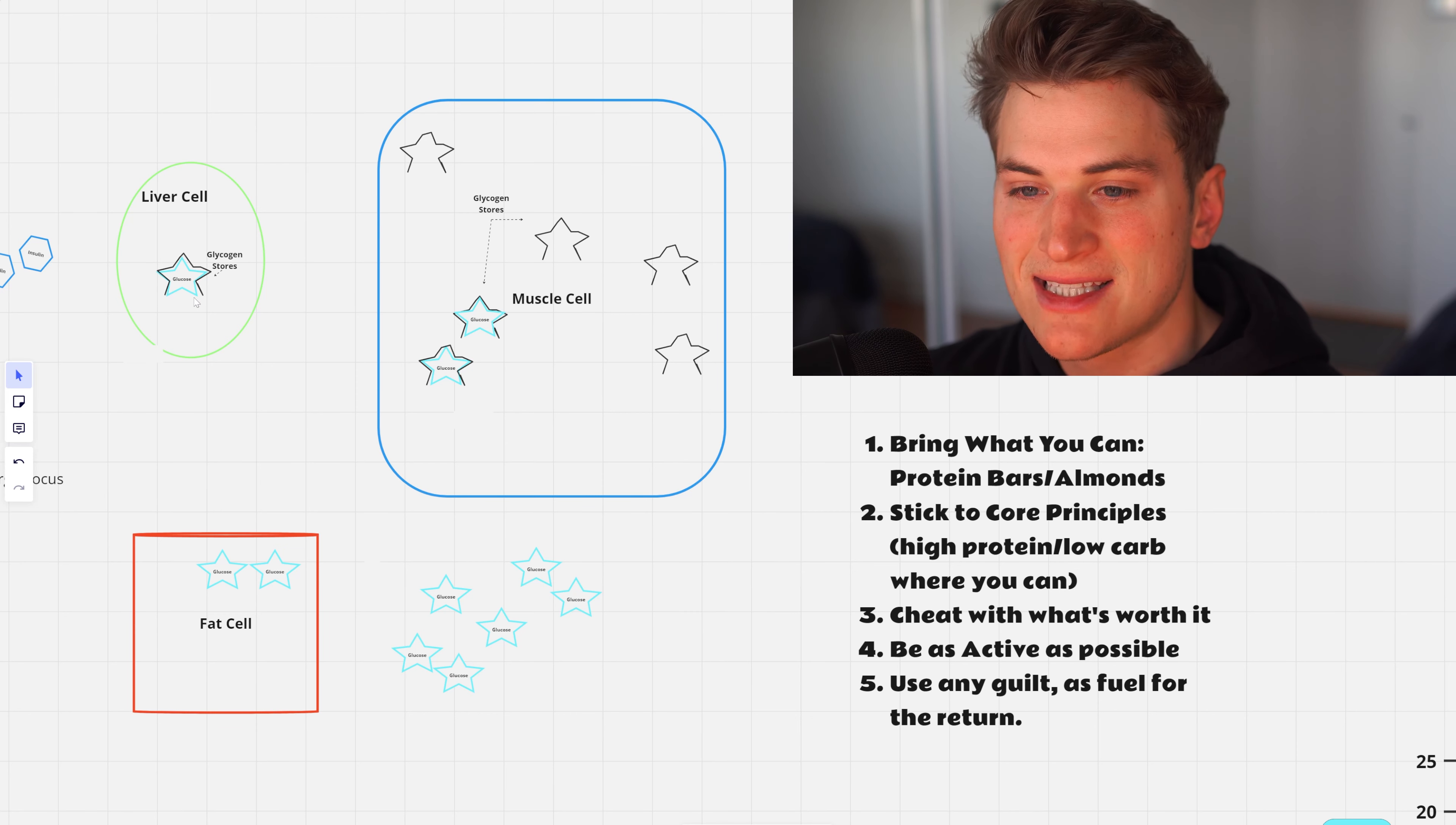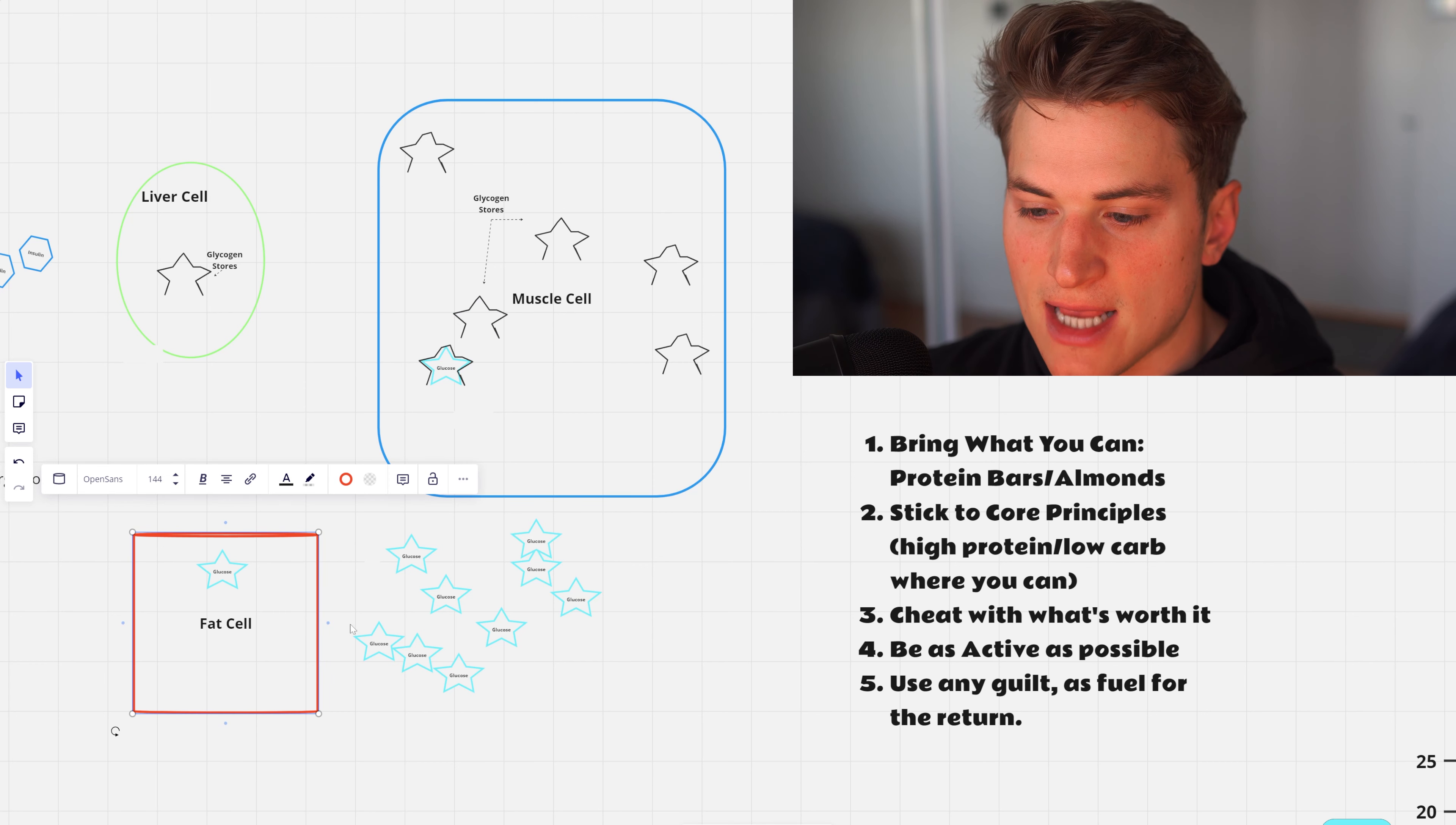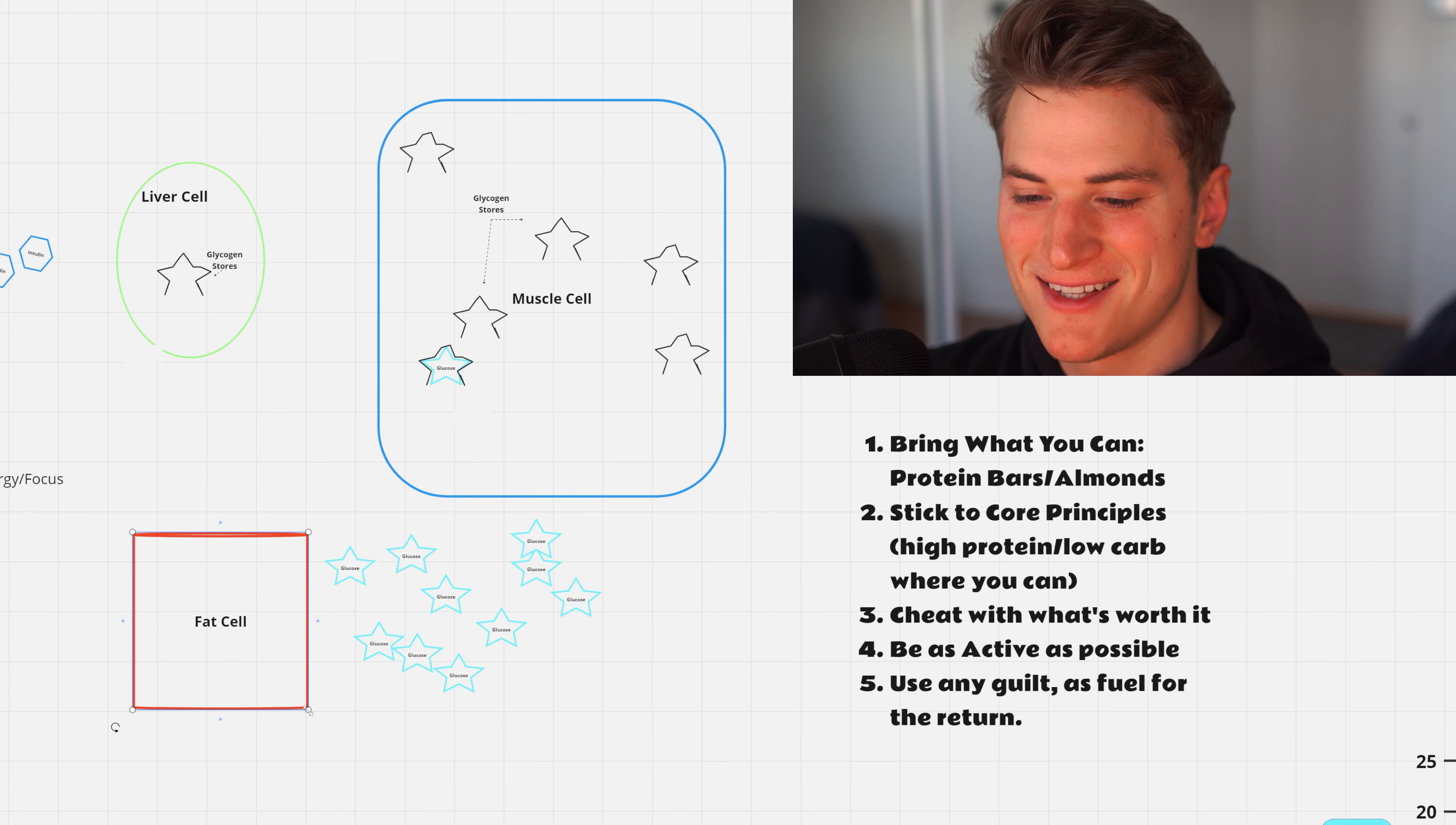So it gets that glucose from three different areas: from your liver cell - this is the bloodstream, let's pretend - from your muscle cells and from your fat cells. So all three of these happen simultaneously. So the great part about that is as glucose leaves the fat cell it starts to shrink a little bit. That's how you notice the fat around your body gets smaller and less noticeable.